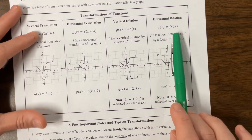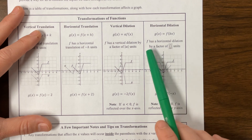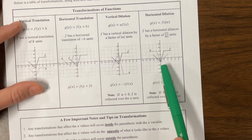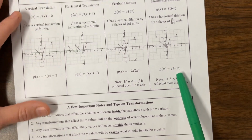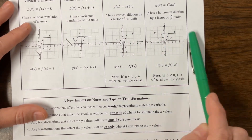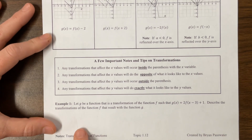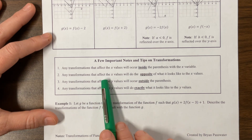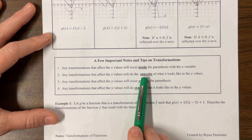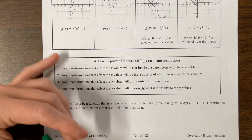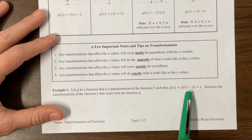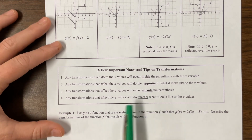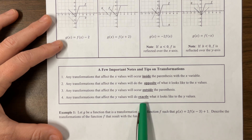On the horizontal dilation: f of bx has a horizontal dilation by a factor of the absolute value of 1 over b units. So if we take this one and we have a negative x, f of negative x just reflects us over the y-axis. Any transformations that affect the x values will occur inside the parentheses. Any that affect the x values do the opposite of what it looks like — so if you have something like minus 3 right here, it's actually going to move it in the positive 3 direction. Any transformations that affect the y values occur outside the parentheses and do exactly what it looks like to the y values.